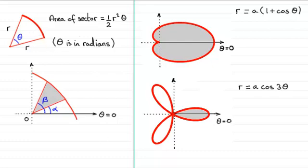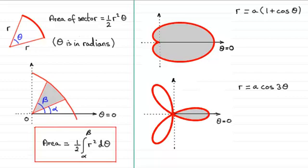Well it turns out, and this is given without proof, it turns out that the area given here is equal to half of the integral of r squared with respect to theta integrated between the limits alpha and beta.